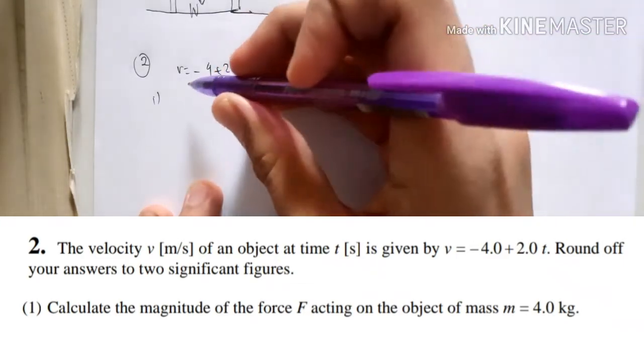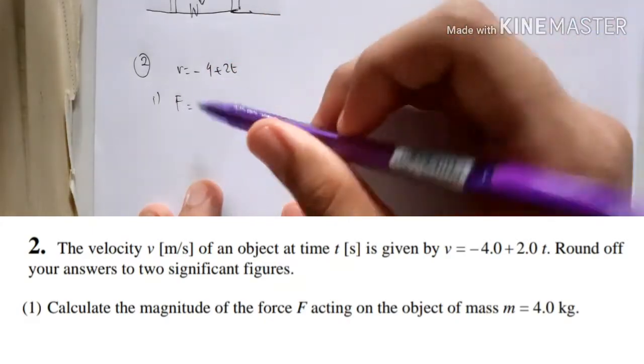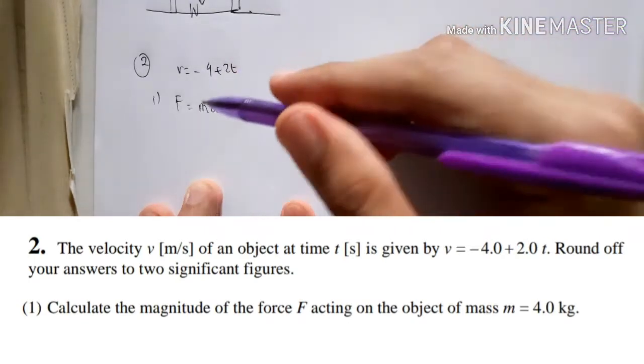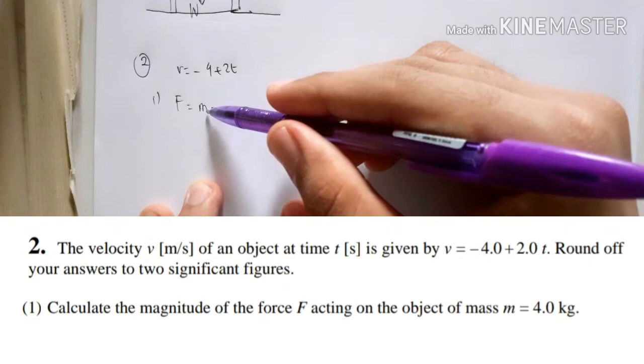So for that, the magnitude of the force, you remember that the formula of the force according to Newton's second law is m times a. And this is mass and this is acceleration. Mass is already given, 4 kg.